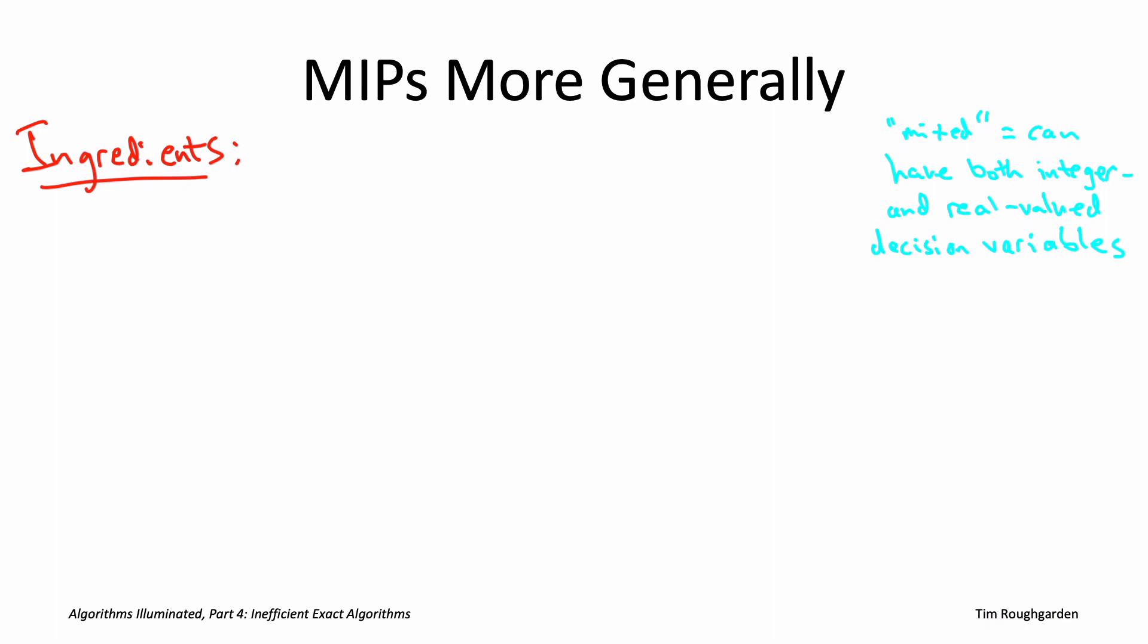The one really important restriction is that both the constraints and the objective function should be linear functions of the decision variables.